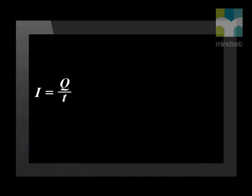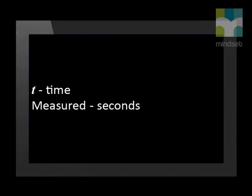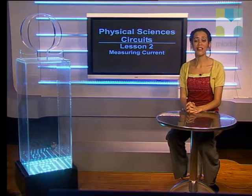Bruce has introduced us to quite a lot of new information in this lesson. We have learnt that we can measure current with an ammeter, which is always connected in series because of its low resistance. We also learnt that current is the same throughout a series circuit. Finally, we derived the equation I equals Q divided by T, where I stands for current measured in amperes, Q stands for charge measured in coulombs, and T stands for time measured in seconds. Now that we have learnt about current in a circuit, in our next lesson we will learn about potential difference. Grade 10s, you'll find more information about circuits at www.mindset.co.za/learn. Remember to try some of the questions in the task video. Goodbye.